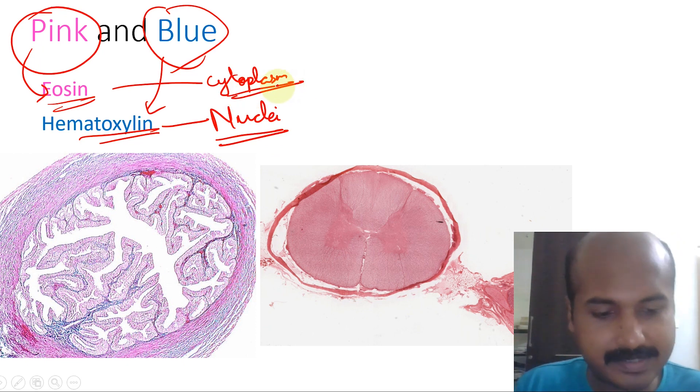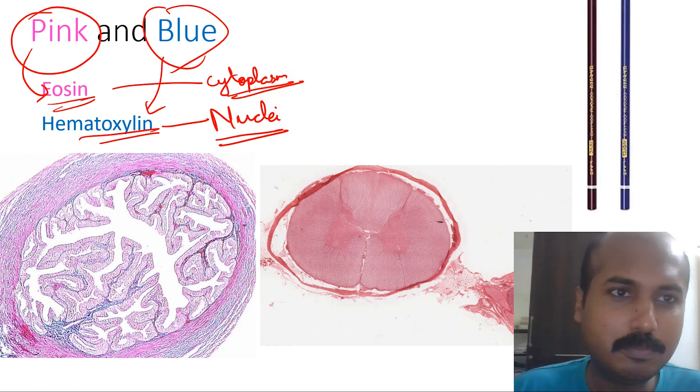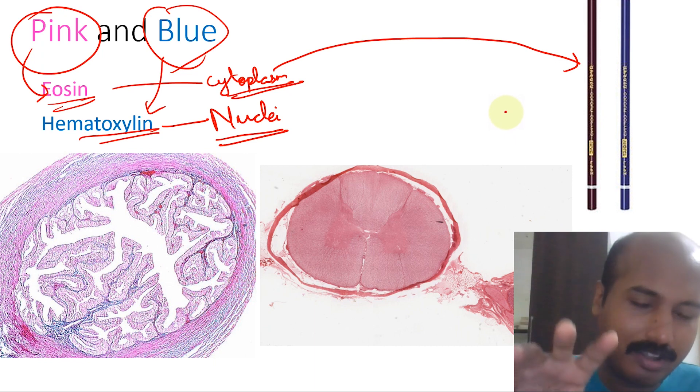If you're learning in India, you might be familiar with these two pencils. The pink pencil is the eosin pencil, which you'll use to shade when you draw a histology diagram. You'll be shading the cytoplasm and cell membrane with the eosin pencil.